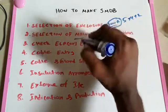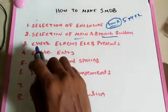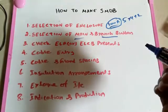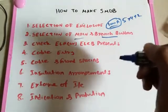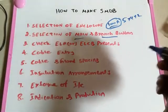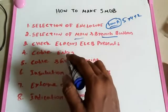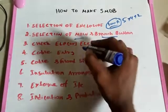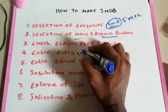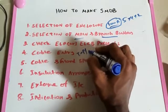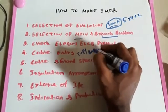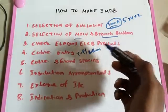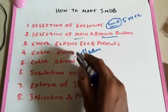Next, check for ELR or ELCB requirements. In this case no ELCB is mentioned, but sometimes it is specified. After that, consider the cable entry — whether the cable enters from the top or the bottom — and construct the SMDB accordingly, as this is a very important consideration.